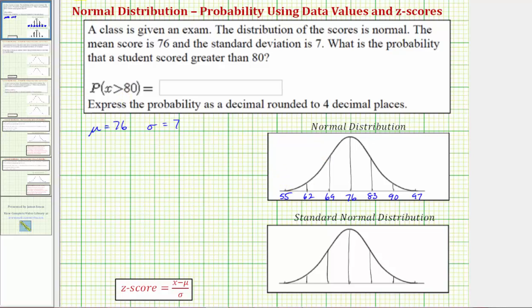So notice how the test score of 80 would be between 76 and 83, a little closer to 83. So let's say 80 is approximately here. We want to determine the probability that the test score is to the right of 80, meaning the test score would be in this region here.